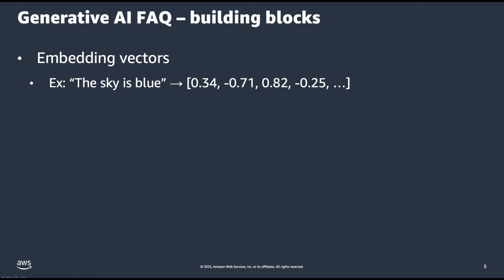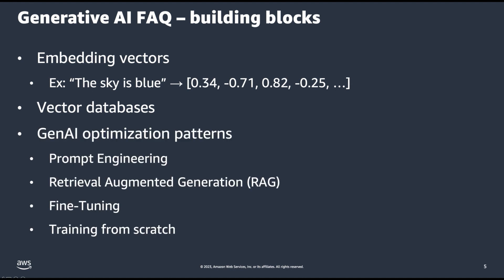Once you have generated your vectors, you will need to store them in a vector database. And finally, once you have provided your model with the data it needs, you will need to consider several patterns commonly used to improve performance. These include prompt engineering, or using different prompts to optimize responses the model gives; retrieval augmented generation, in which you augment the model's knowledge with a vector database; or you may choose to fine-tune your model, which involves providing the model with additional training data so that it learns about your use case specifically. Or you may choose to train a large language model from scratch, which is the most expensive in terms of time and compute cost, but can make sense for highly specialized use cases.